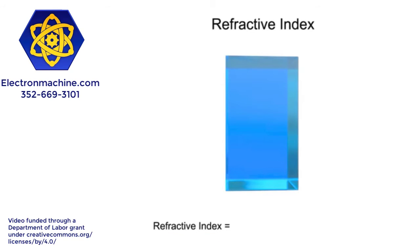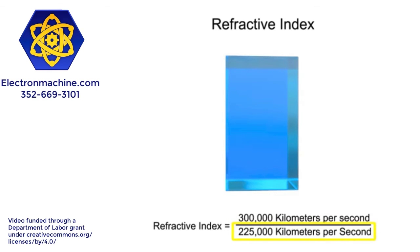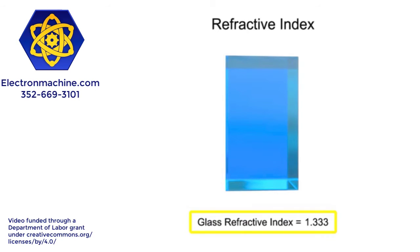This is calculated by dividing the speed of light in a vacuum, 300,000 kilometers per second, by the speed of light in glass, 225,000 kilometers per second. The refractive index of air is 1.0003.